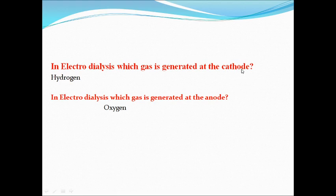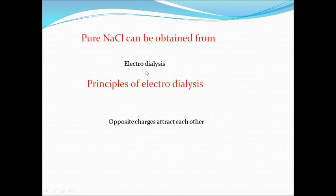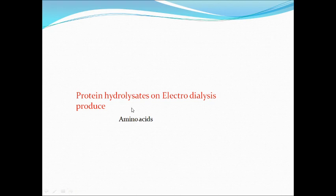In electrolysis, which gas is generated at the cathode? Very, very important — remember: hydrogen gas is generated at the cathode, oxygen gas is generated at the anode. Remember: HC (Hydrogen-Cathode), OA (Oxygen-Anode). Pure NaCl can be obtained from electrolysis. The principle of electrolysis includes that opposite charges attract each other. Protein hydrolysis on electrolysis produces amino acids. If you separate protein — which is made up of amino acids just like a house is made up of bricks — you can separate amino acids. If you break down proteins, you will get amino acids.